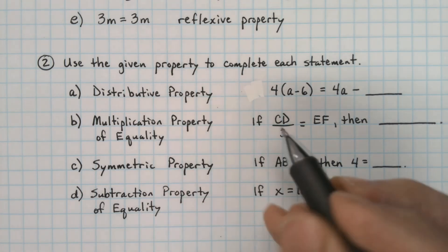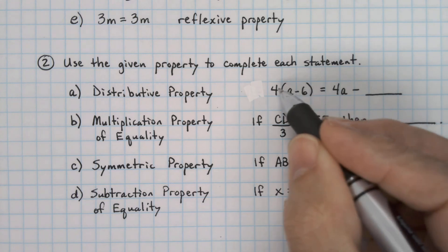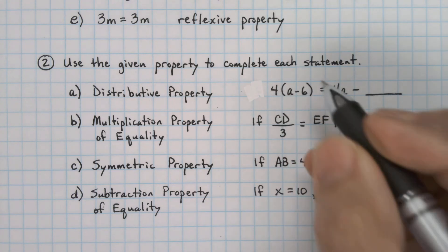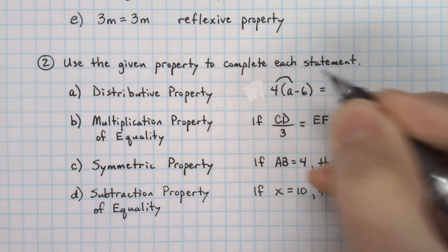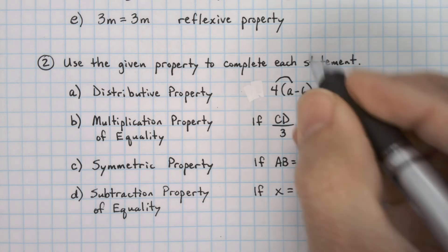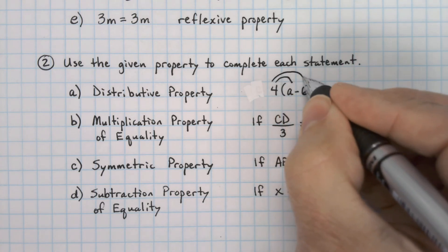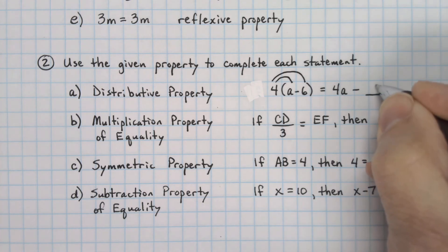The distributive property says that you're going to have a group of things multiplied by one item. And if we have 4 times a, we would get this 4a, and 4 times 6 would give you 24.